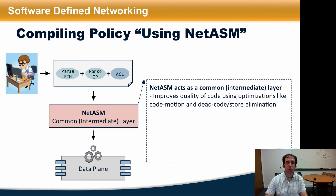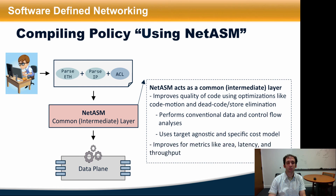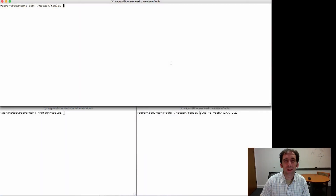Having this intermediate representation improves the quality of code using optimizations such as code motion and dead code elimination. Using NetASM, a compiler can perform conventional data and control flow analyses. The compiler can also use a target-agnostic or target-specific cost model to apply such optimizations, targeted to improve metrics including area, latency, and throughput. Optimizations include target-agnostic optimizations like dead code or dead store elimination, and future work may include target-specific optimizations based on target-specific cost models.